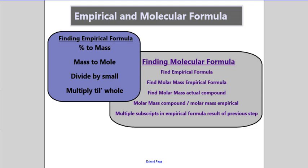From that activity and from honors, you probably remember empirical molecular formulas at least a little bit. Empirical formulas have that fun little rhyme: percent to mass, mass to mole, divide by small, multiply till whole. Once you find the empirical formula, you can find its molar mass, and if you have the molar mass of the actual compound, you can figure out the subscripts for that compound. You just divide the molar mass of the compound by the empirical formula molar mass, and that tells you the ratio.